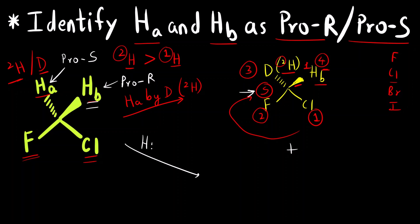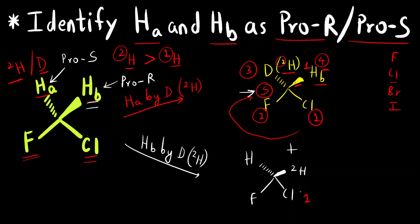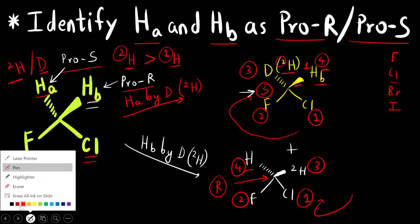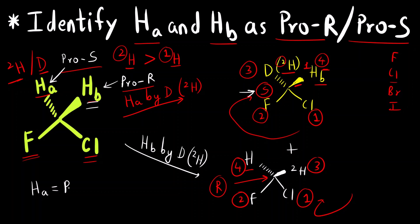Now let us do it for HB. Replacing HB by deuterium: chlorine is on the wedge bond, ²H is placed on the structure, and H is on the dash bond. We assign priority 1, 2, 3, 4. Going 1, 2, 3 it is clockwise, and the fourth priority group is on the dash bond, so the absolute configuration is R. Therefore HB is Pro R. In summary: HA is Pro S and HB is Pro R.